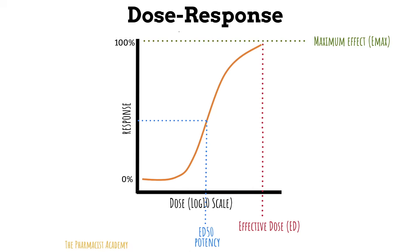The ED50 or EC50 is also known as the potency. When two drugs are tested in the same individual, the drug with a lower ED50 is considered more potent. This means a lesser amount of the more potent drug is needed to achieve the same effect as the less potent drug. A drug that's more potent doesn't necessarily mean that it causes more side effects.